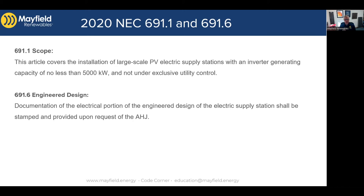Section 691.4 talks about the special requirements. Access is limited to authorized personnel only — it's behind a fence, it's guarded, it's not somewhere anybody can walk right up to. The loads that are associated, such as SCADA and DAS monitoring, are anything specific for the PV array itself. The other big requirement is that these systems are not installed on buildings. There are systems greater than five megawatts installed on buildings, but 691.4 clearly states that to follow the 691 rules, they cannot be installed on buildings.